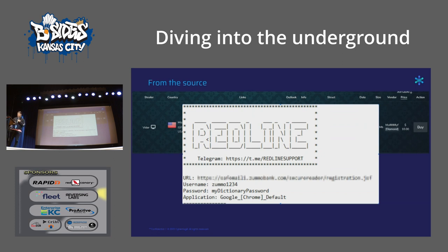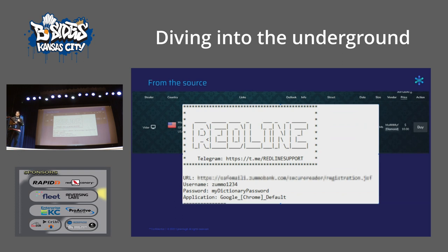Once you purchase the account, you get a plain text file back — usually stamped with the info stealer used (in this case, RedLine) — containing the URL or subdomain compromised, plus the username and password. That's what threat actors get. From there, they can attempt to log in. In cases like Uber, that's often not enough — they'll need to employ additional attacks like social engineering — but it's a starting point to attempt network access.